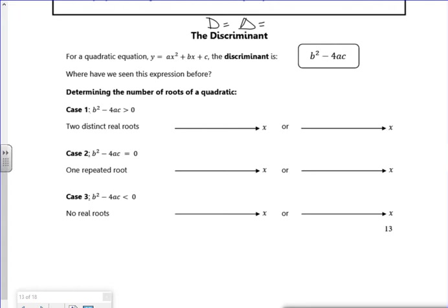So if I've got a positive value in that square root, I get a plus or minus number, so what it means is I've got two distinct real roots. So it crosses twice, whether it's a u-shape or an n-shape.